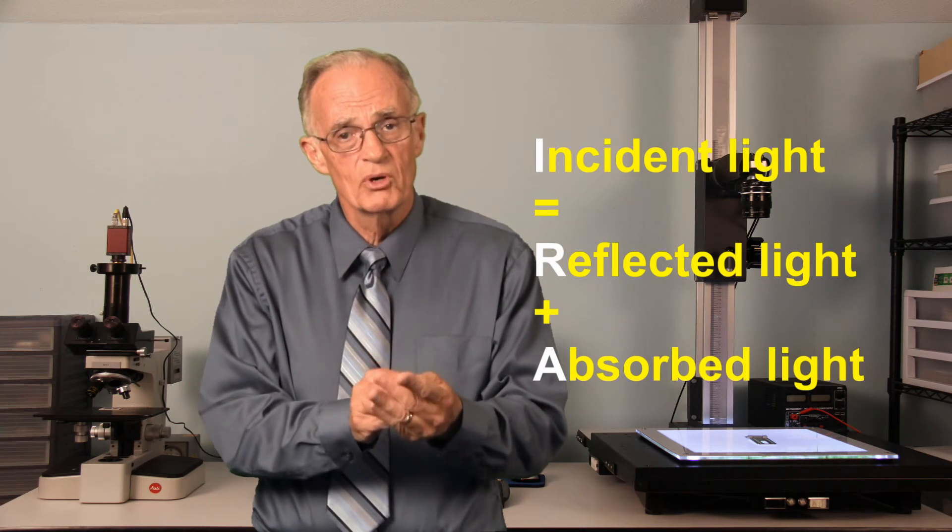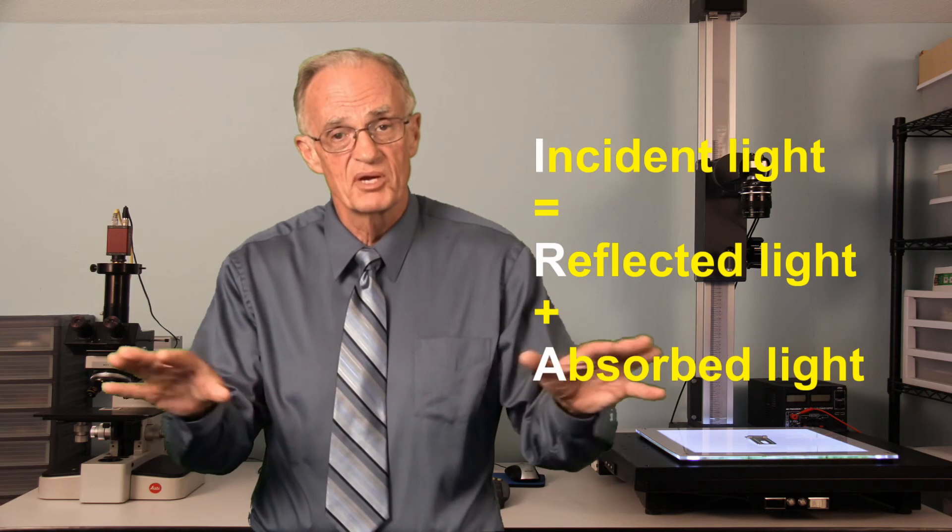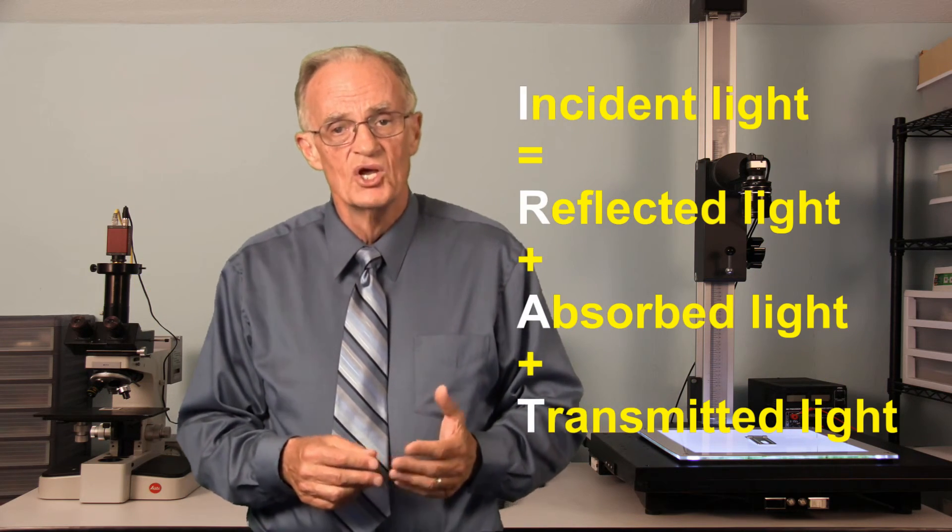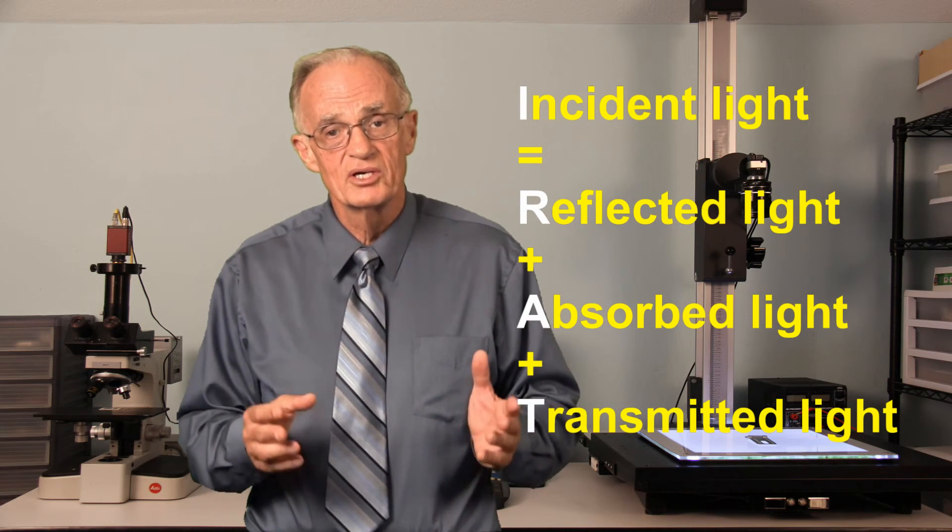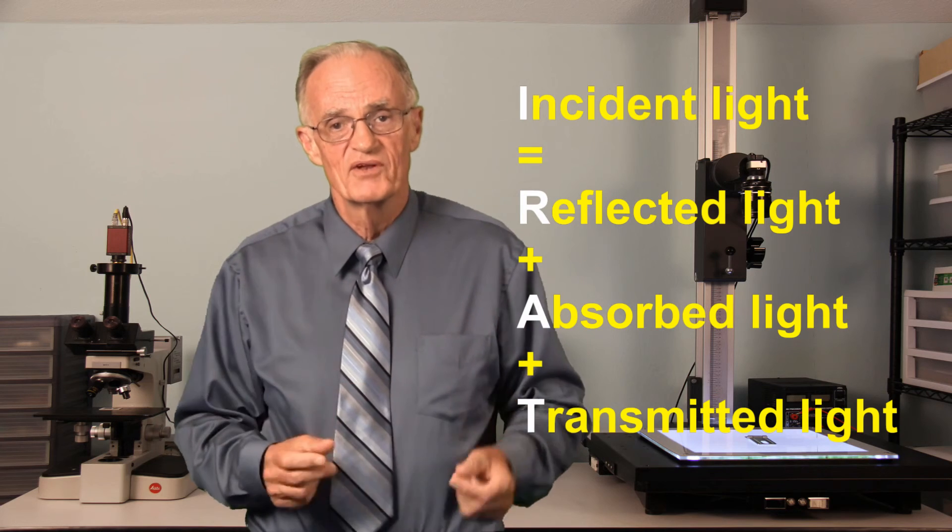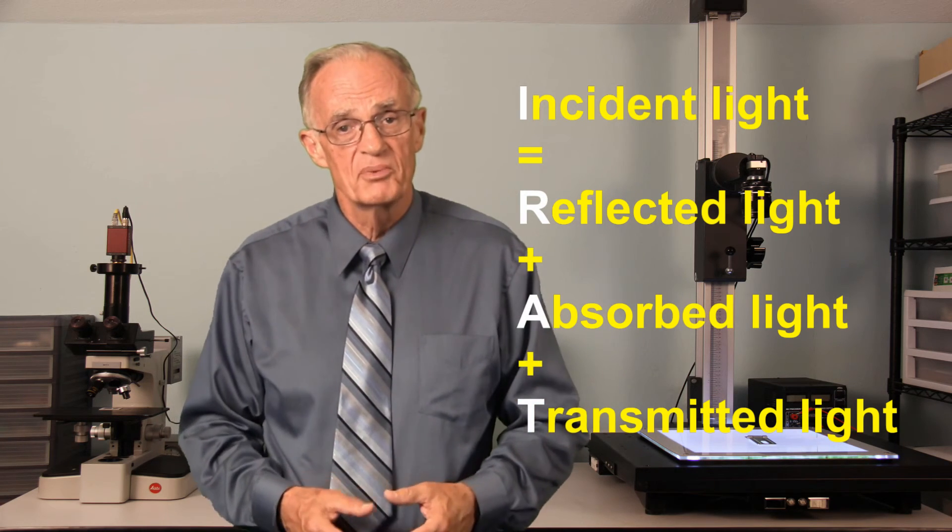Light energy can be absorbed into the material. Usually the absorbed light energy is dissipated as heat energy. And light can be transmitted through a material. When light is transmitted through a material, refraction can take place, the bending of the waves of light. How much refraction depends upon the density and optical properties of the material.